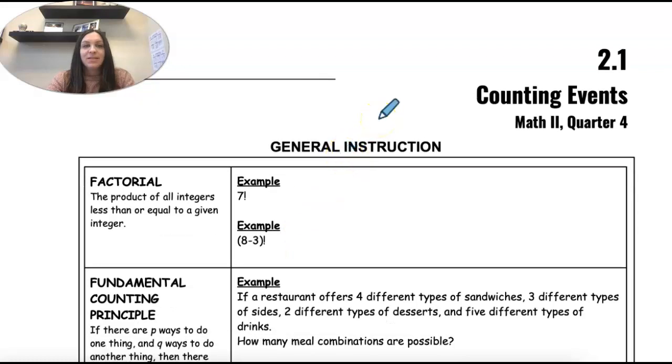Okay, so module 2 and 3, we're getting into probability. So 2.1, we're just going to look at counting events.